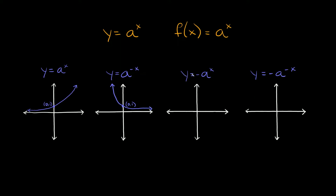This one, y is equal to negative a to the x, is going to be on the other side of the x-axis, and this one runs through the point (0, negative 1). And then this last one, y is equal to negative a to the negative x, is going to look something like that, and it also runs through the point (0, negative 1).